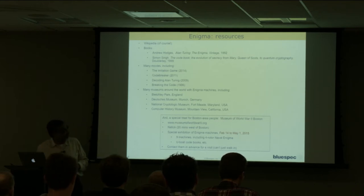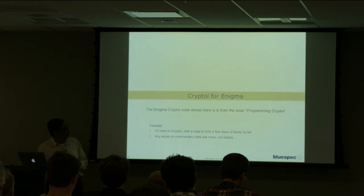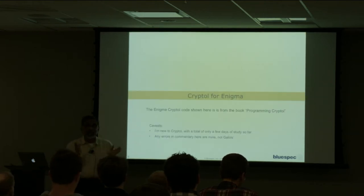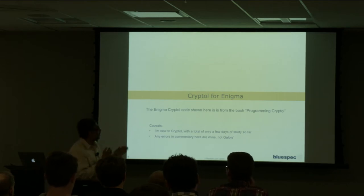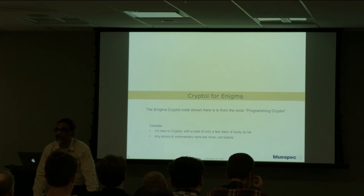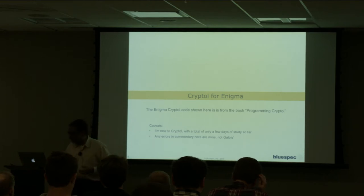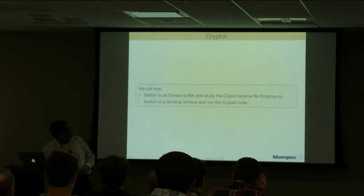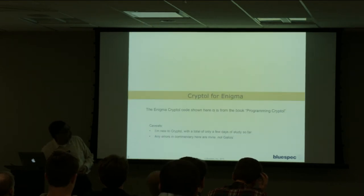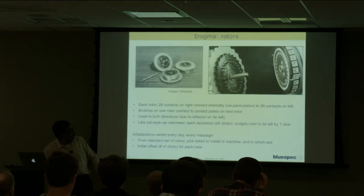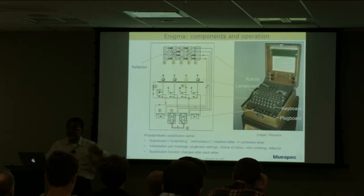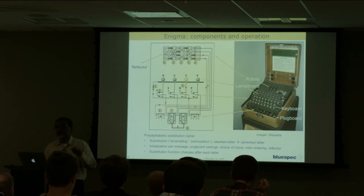Moving on to Cryptol. The encryption isn't just a simple letter-for-letter substitution — the machine actually has state that cycles. The state is basically the settings of the rotors. That's why it's called a polyalphabetic substitution: it's a substitution where the substitution function changes on each letter because the alphabet setting changes.